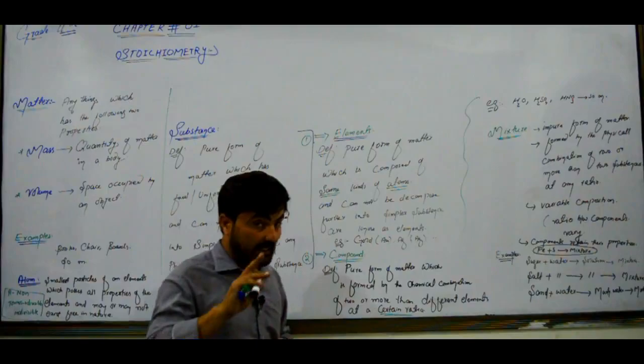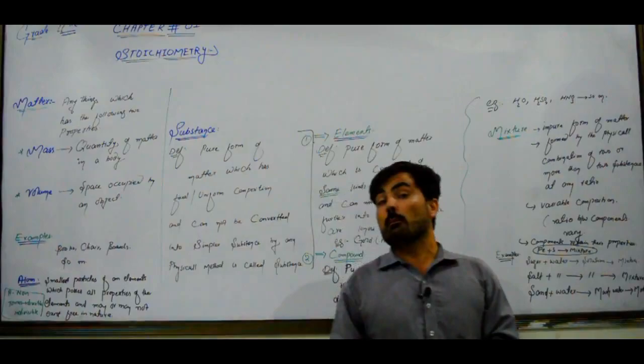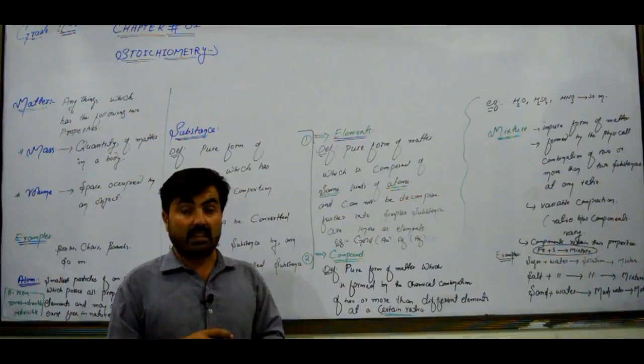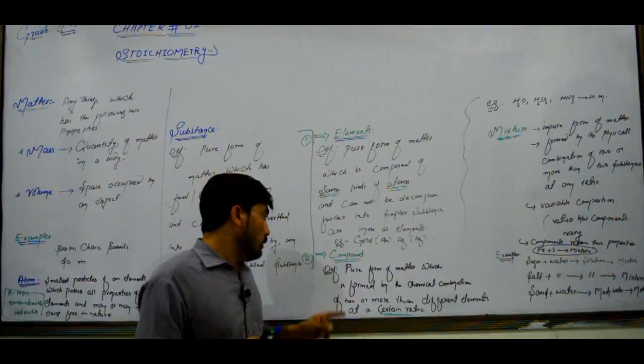One element can have more than one isotope. Isotopes are atoms of the same element that have the same atomic number but different mass numbers — meaning a different number of neutrons — and they have different physical properties.